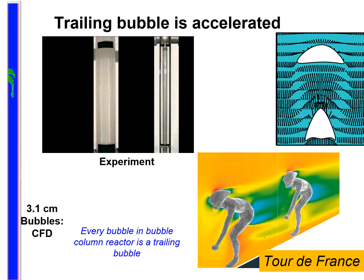These are computational fluid dynamics simulations. Let's see if experiments show the same. I performed experiments in two different columns of two different diameters. In each case, we have two bubbles of the same diameter placed one below the other. You can see clearly, once more, that the trailing bubble catches up with the leading bubble and coalesces.